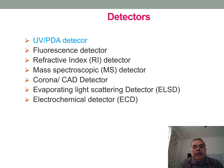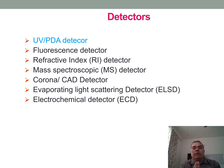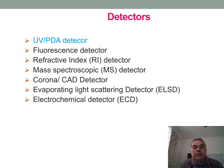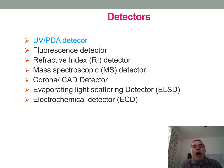The different detectors used in HPLC are: UV detector, PDA detector, fluorescence detector, refractive index detector, mass detector, corona detector, evaporating light scattering detector, and electrochemical detector. In the pharmaceutical industry, UV detectors are mainly used because most pharmaceutical molecules have UV absorbance.